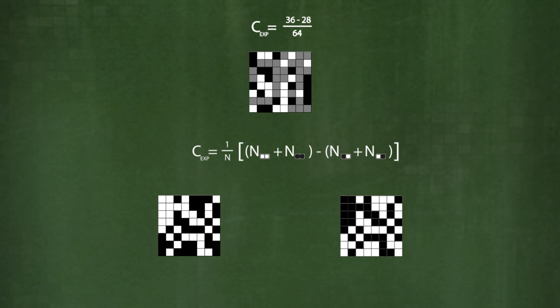By dividing by the total number of all measurements, the value of c gets normalized and ranges between minus one, anti-correlation, and plus one, perfect correlation.